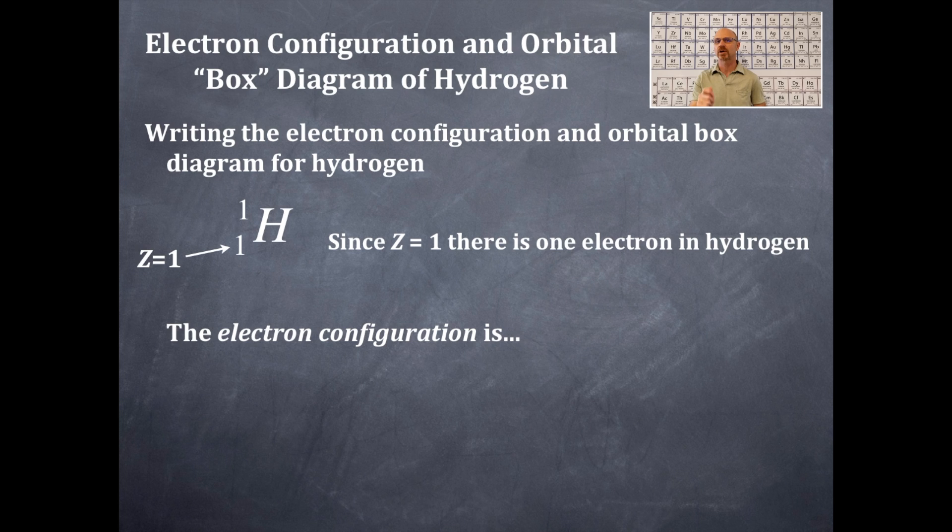The electron configuration for hydrogen is 1s1. That's how it's read. 1s1. So what do these numbers and letters mean? So this one that's in blue is n, and that's the principal quantum number. That's the n. That's the energy level in which that electron and orbital is in. n.